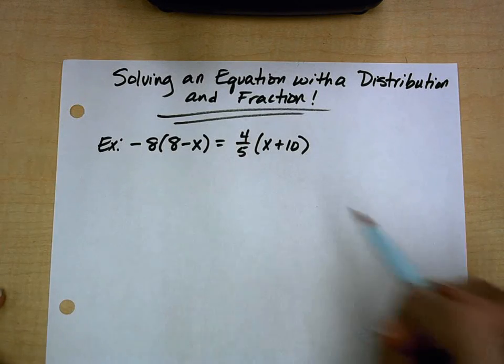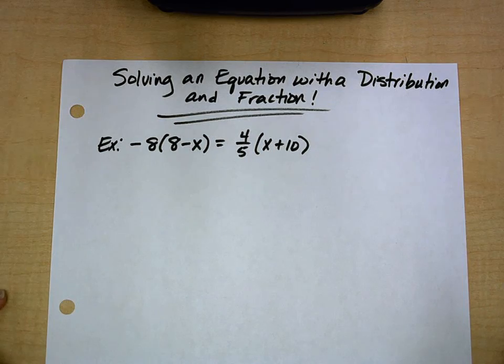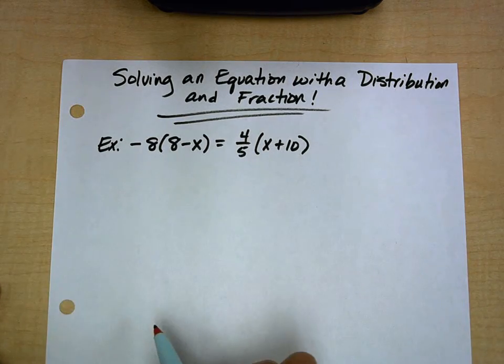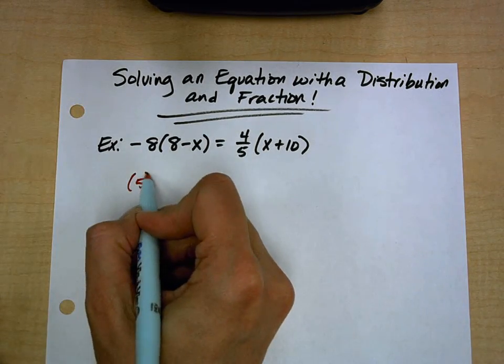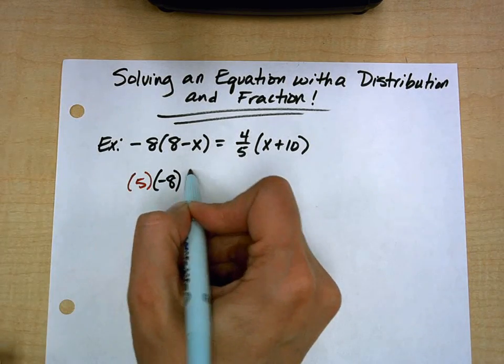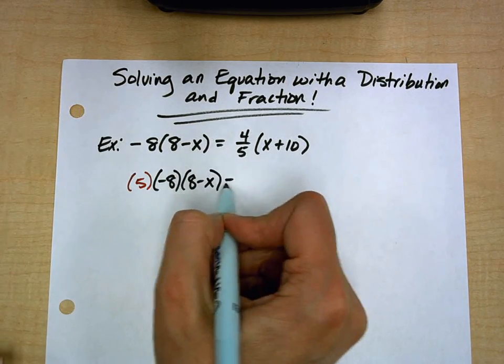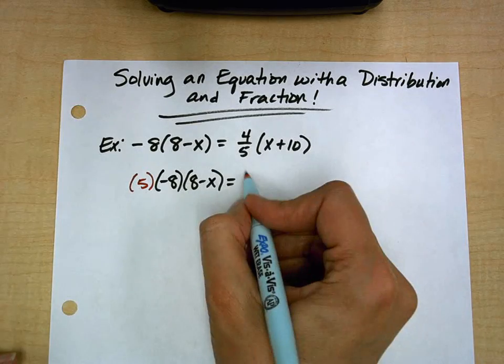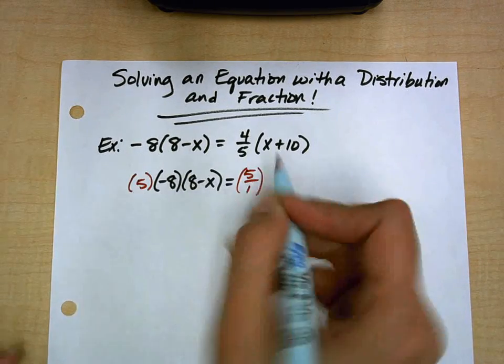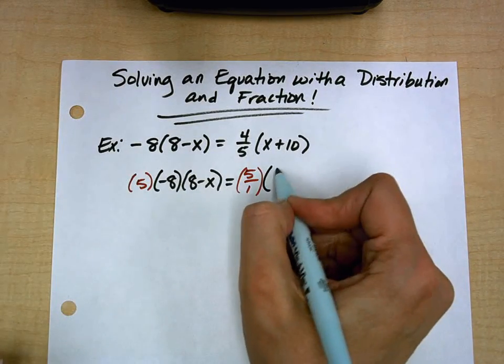So my only fraction is 4 fifths, therefore my least common denominator is 5. So I'm going to multiply both sides of the equation by 5. On the right-hand side, I'm actually going to multiply by 5 over 1 simply because I'm multiplying it by a fraction.